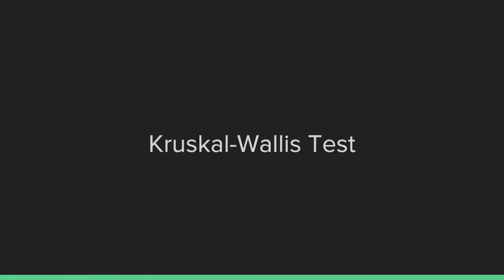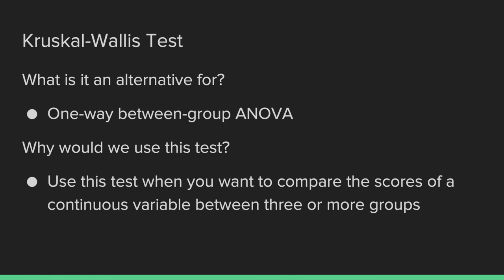We're going to continue now with the rest of our nonparametric tests, the first of which is the Kruskal-Wallace test. This is an alternative for the one-way between-group ANOVA. As with all these tests, they are nonparametric alternatives that work around the assumption of normally distributed data. Specifically for this test, you use it when you want to compare scores of one continuous variable between three or more groups — whereas t-tests are used when comparing between two groups, this is for when you have more groups to compare.